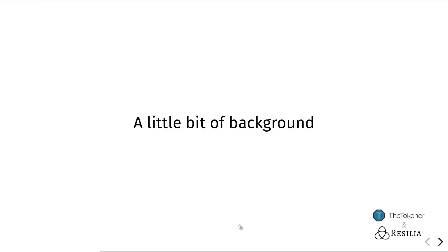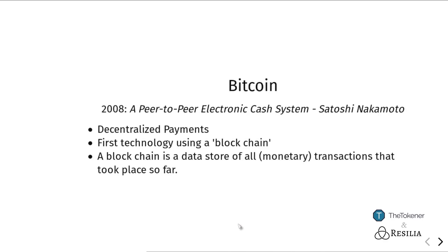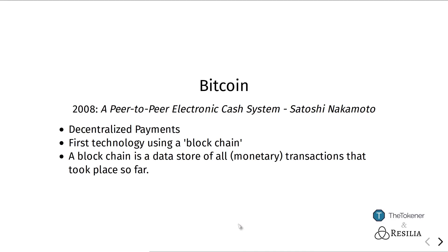Let's start with a little bit of background information and history of how Ethereum came to be, because this really helps to understand how you can use it. In 2008, Satoshi Nakamoto published a white paper, an academic paper about Bitcoin. Bitcoin was the first software system that allowed performing payments in a decentralized way digitally, and was able to do so by using a technology it introduced called blockchain.